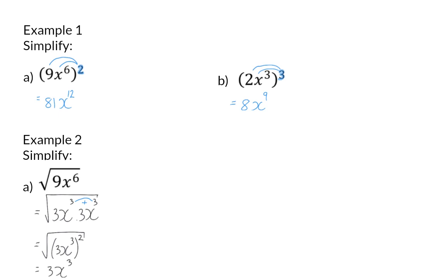Instead of going through the trouble of breaking the value up into two identical factors, you can simply remember that the exponent has to be divided by 2. This is because we want to form two identical factors. So the conclusion is: when determining the square root of a variable, simply take the exponent and divide it by 2.